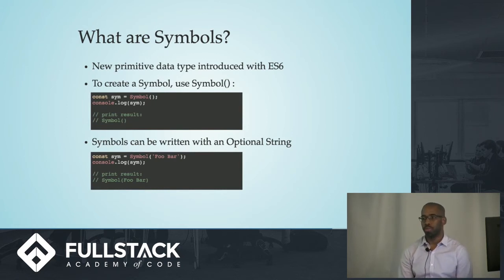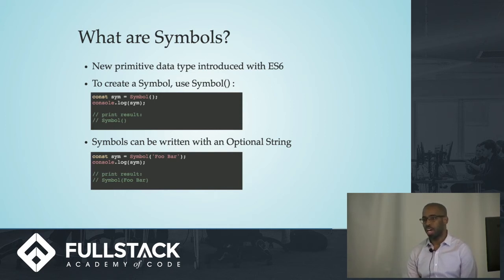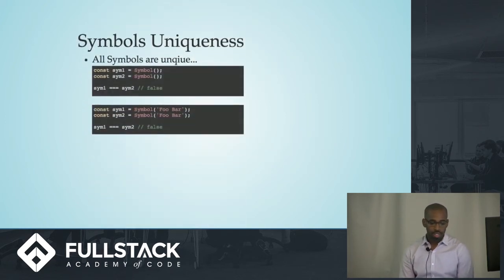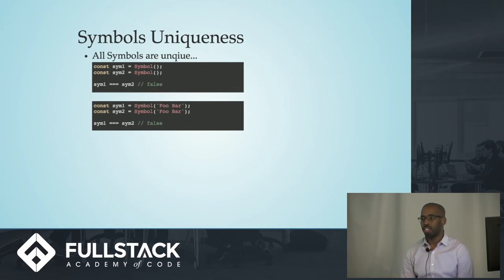So what are symbols? Symbols are the new primitive data type that was introduced with ES6. To create a symbol, you use the word symbol and invoke it with a set of parentheses — you do not use the new operator, it will cause an error. You can also insert an optional string into that symbol to be associated with it. Every time you create a symbol, it's unique. So if you create two symbols the same way — even with the same optional string — they will not be equal to each other. Every instance of a symbol is unique.